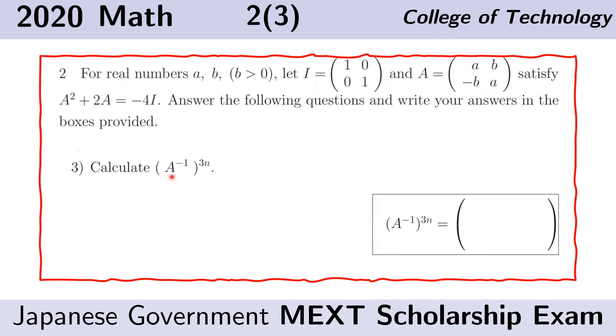Here we are looking for this expression that is A inverse raised to the 3N power. A inverse has been computed from the previous slide, and so we will do a little bit of manipulation given this relationship here so that we can find this expression a little bit more easily.